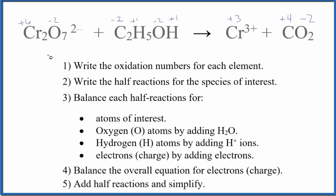Let's balance this redox reaction. We have Cr2O7 2- and C2H5OH, and we're going to balance this in acidic medium using the ion-electron method, also called the half-reaction method. The first thing we need to do is write the oxidation numbers for each element. I've already done that. If you need help, there's a link in the description. From there, we're going to write the half reactions for the species of interest.